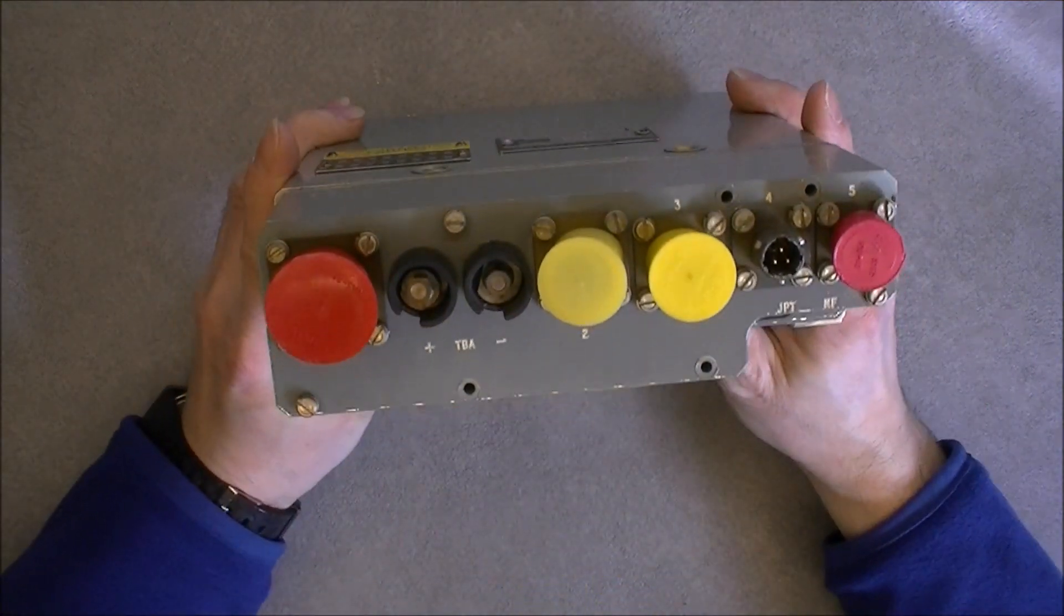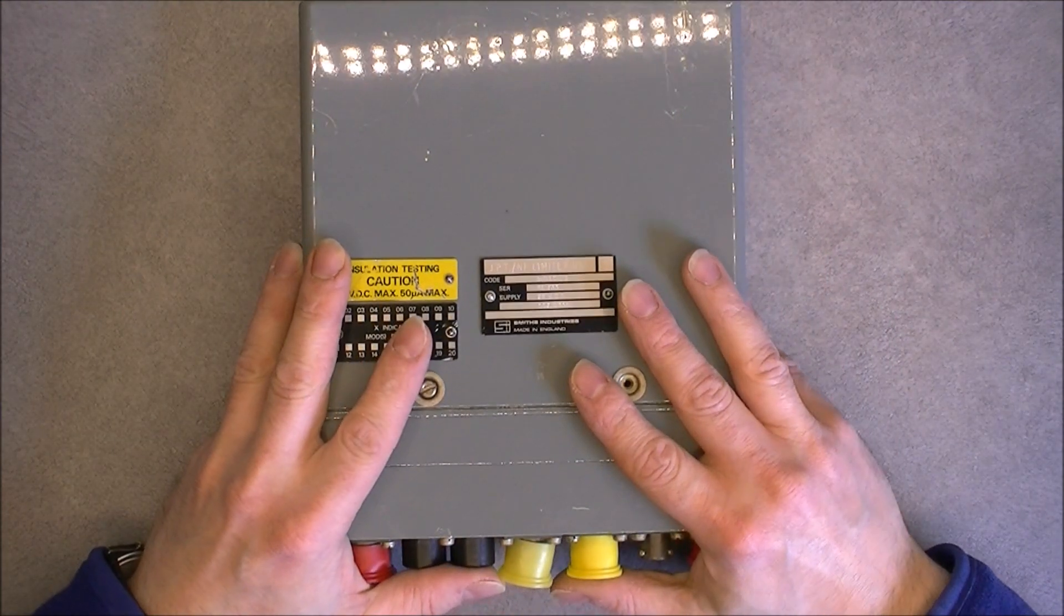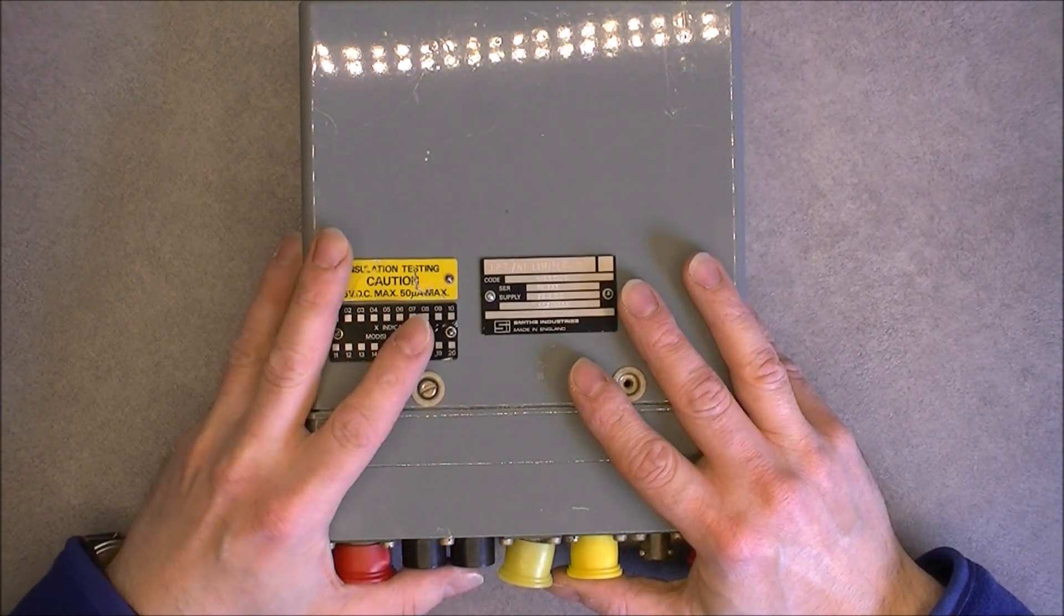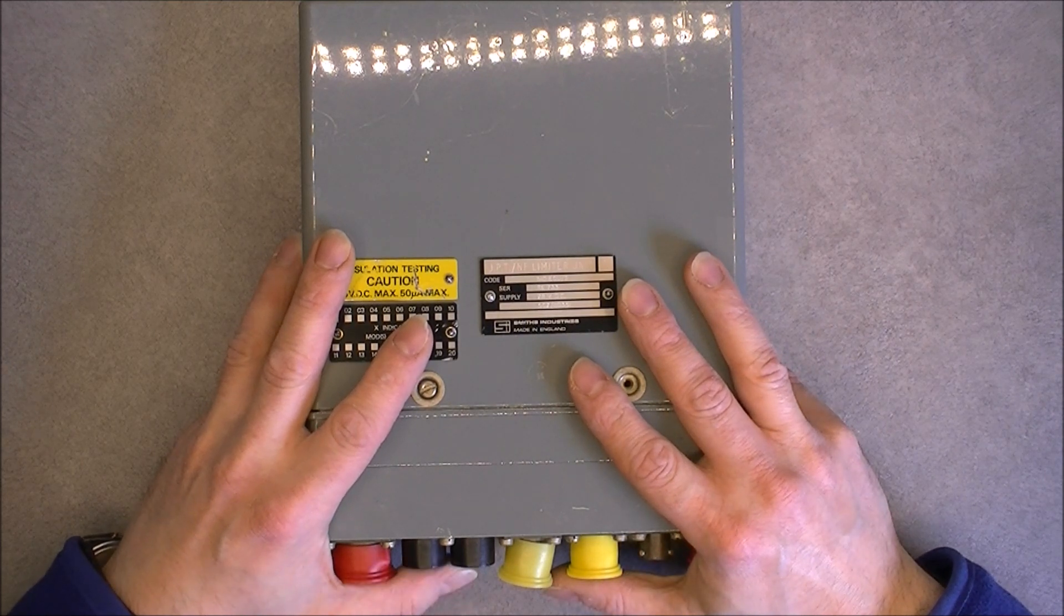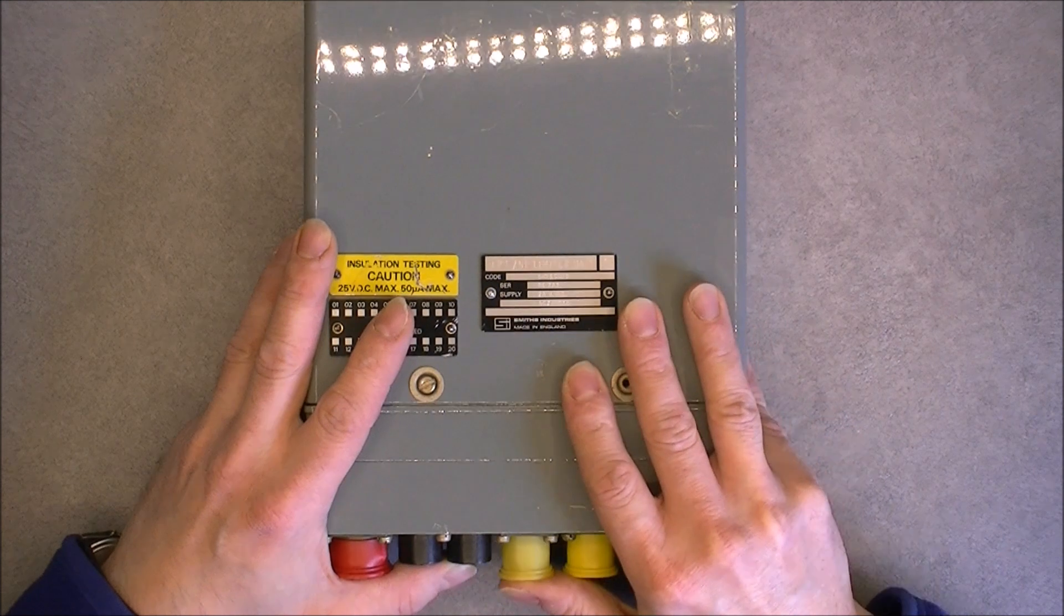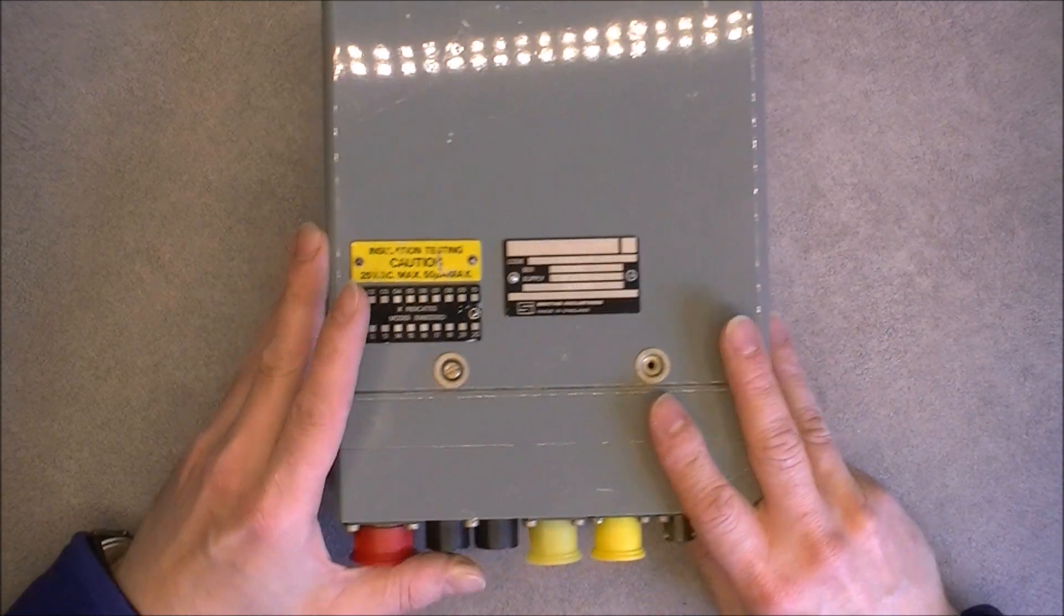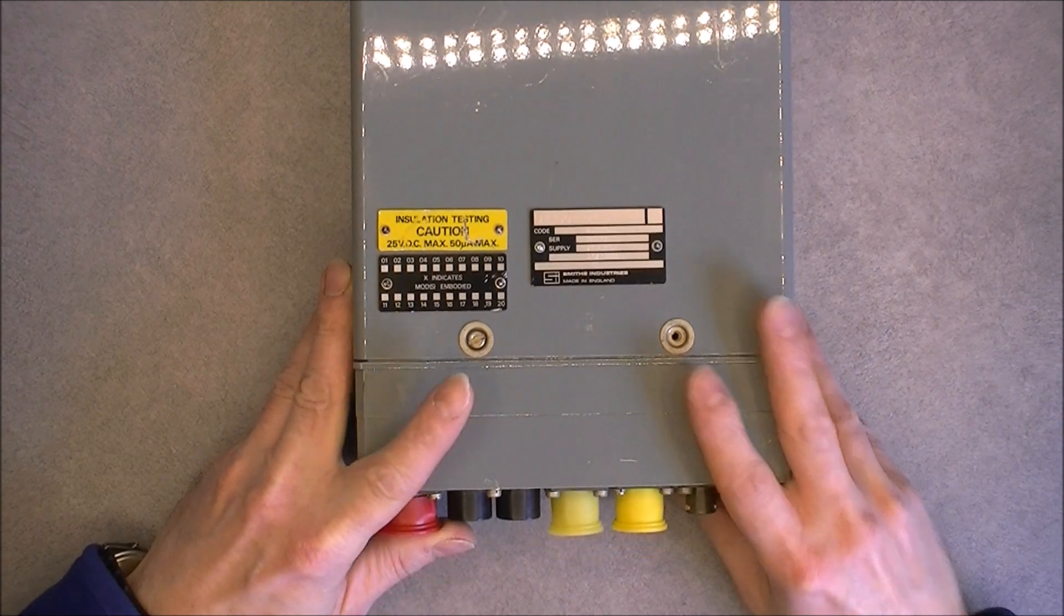So it is a grey box with connectors. It is an engine control unit, but not for a car. For a jet engine. And in particular, I believe, it is for the Rolls-Royce engine of C-Arriere Royal Air Force aircraft.